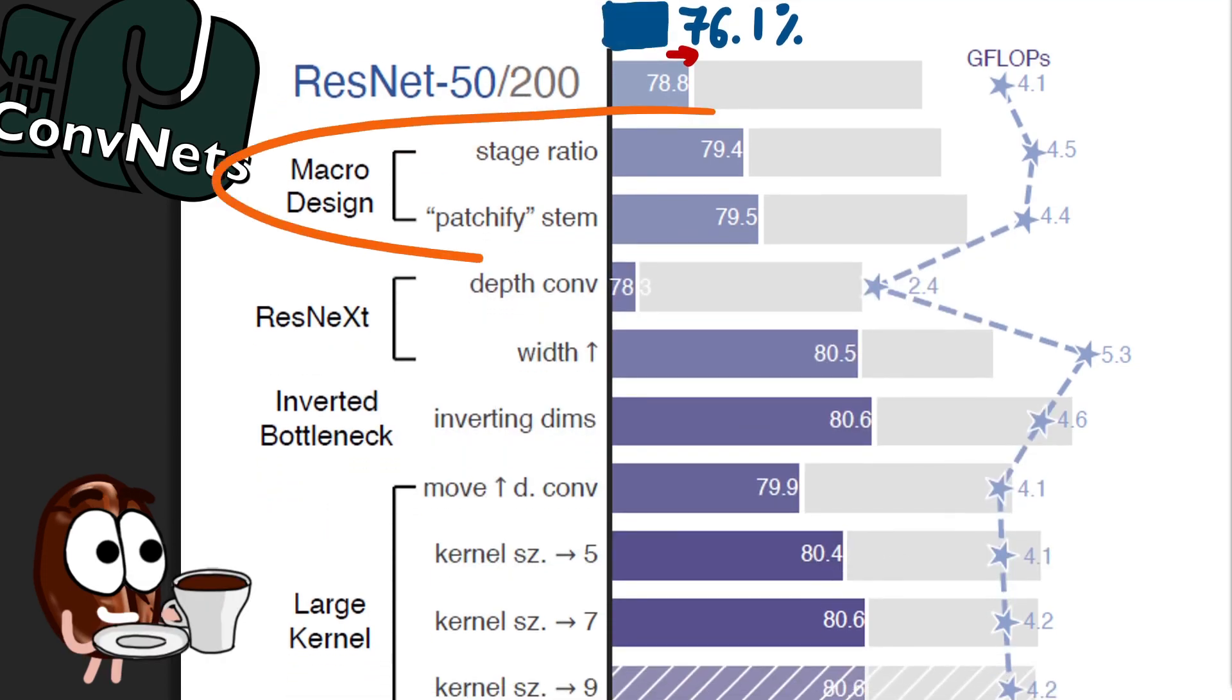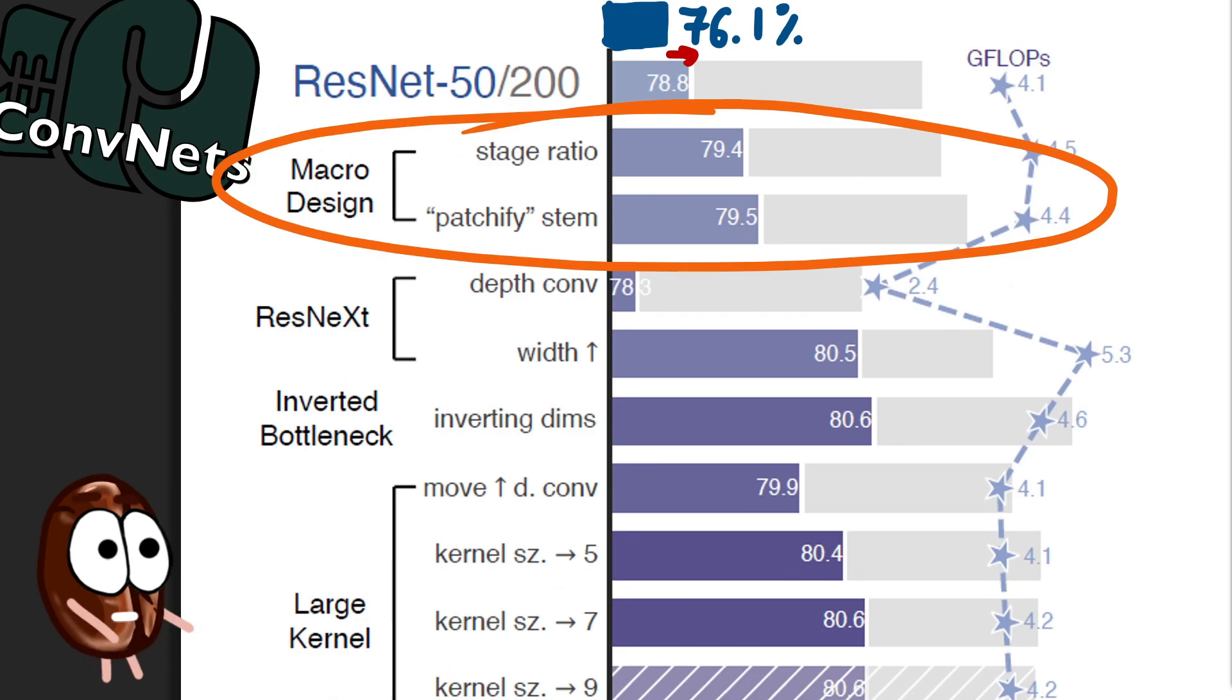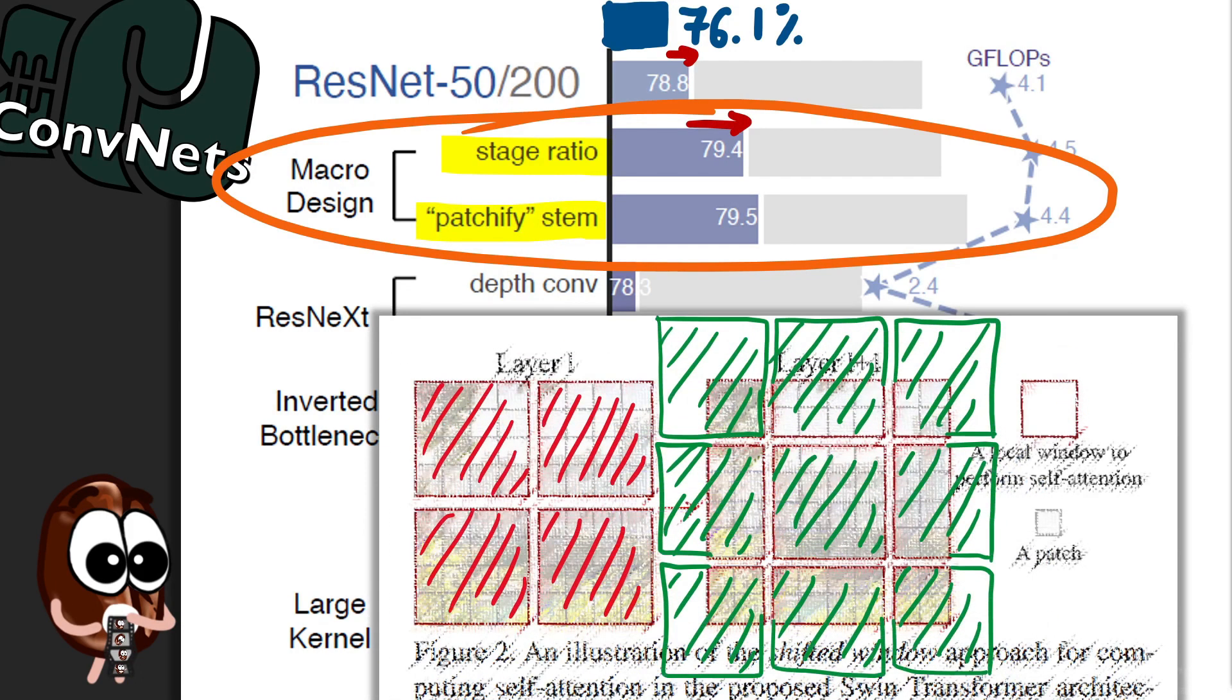The second thing they modernize after they are done with including the training techniques is something the authors call the macro design of the ResNet. For the stage ratio, they adjust the number of blocks in each stage and improve model accuracy, then they make the sliding windows in the ResNet behave more like the patches in vision transformers. So with a larger kernel size and with a stride such that the sliding window does not overlap, this looks already much more like the non-overlapping patches in the transformer. This again increases performance, if only by a little bit.